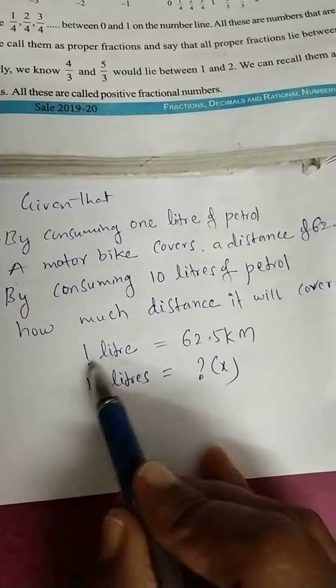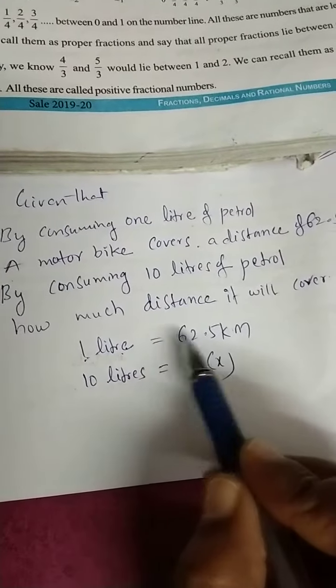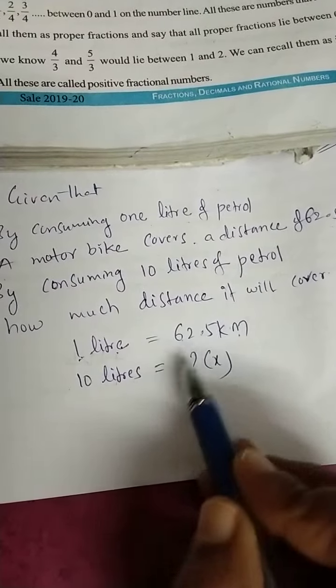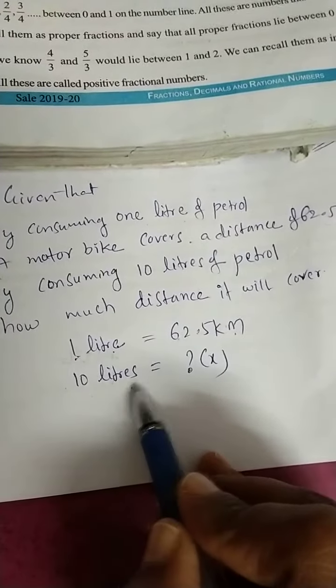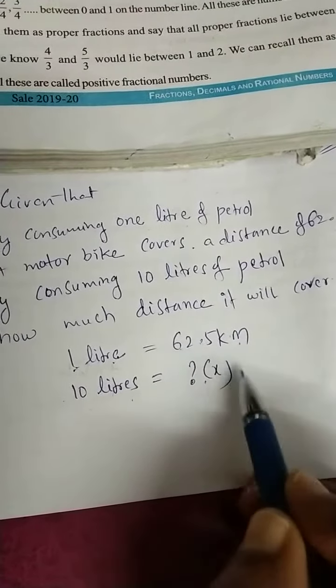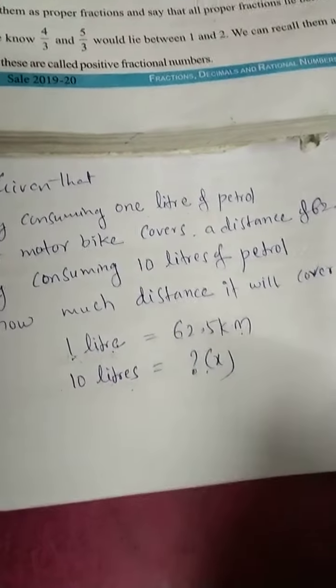Now we should take 1 litre. By using 1 litre, 62.5 km travelled that motorbike. By using 10 litres of petrol, how much distance it will cover? We don't know. That we need to find out. Let us take that unknown value x.